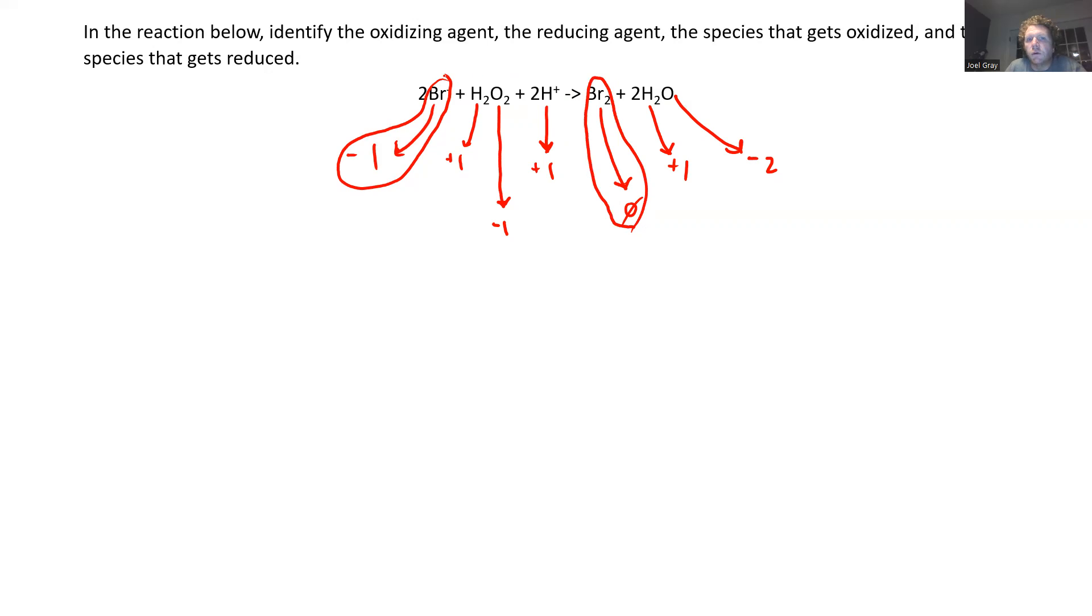So by virtue of it going from minus one to zero, that means it went from a negative charge, something with an electron, to something neutral with one less electron. So this would be bromine gets oxidized. Therefore, by it getting oxidized, it is the reducing agent.